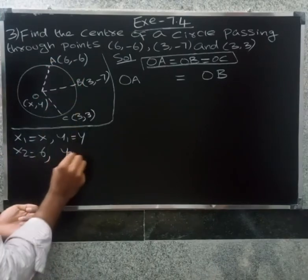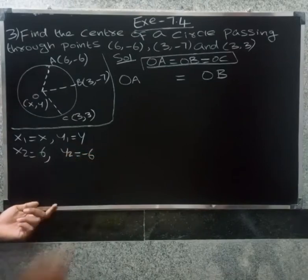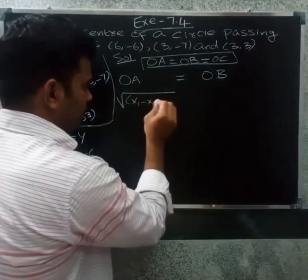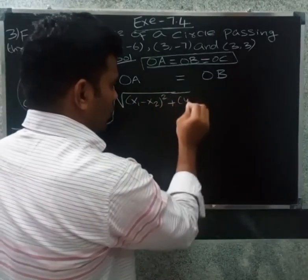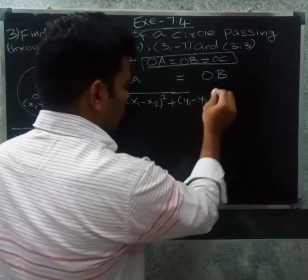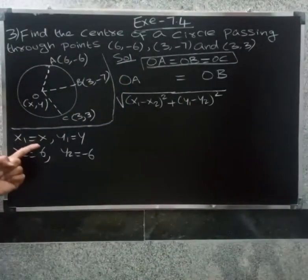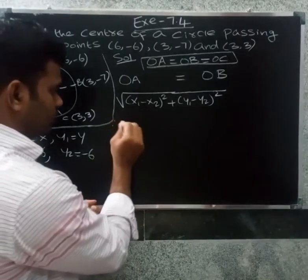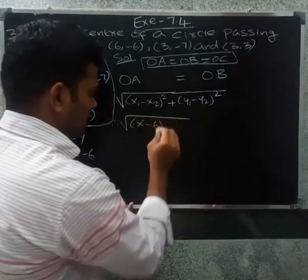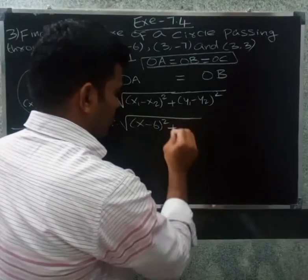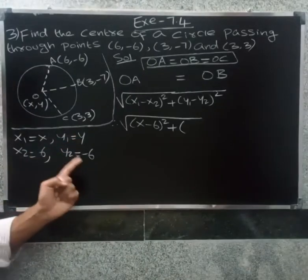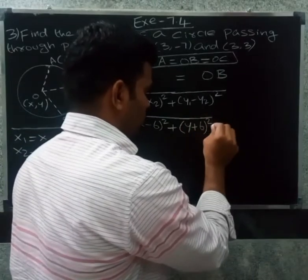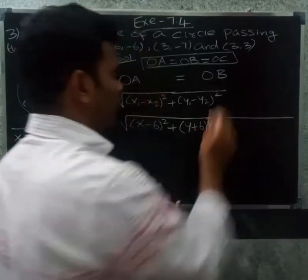y2 equal to minus six. Now apply the distance formula: root of (x1 minus x2) whole square plus (y1 minus y2) whole square. So OA equals root of (x minus 6) whole square plus (y minus minus six), which gives (y plus six) whole square. This equals OB.